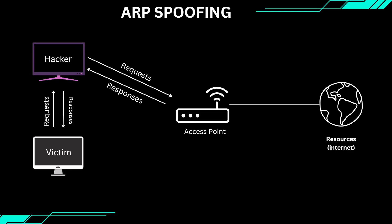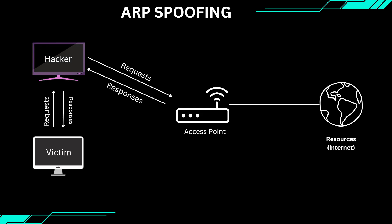Welcome back everyone. In our previous lecture, we explored how once we are connected to a network, it's practically game over. By leveraging techniques like ARP spoofing, we have been able to redirect the flow of network packets, effectively making ourselves the man in the middle. This allows us to spy on users, steal their credentials, and even redirect them to malicious websites. What you have seen so far is just the beginning of what you can do when you are in that position.